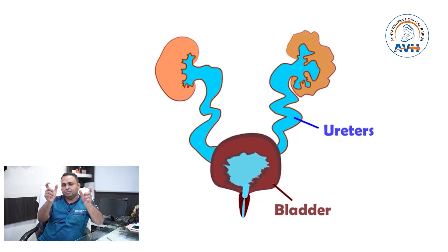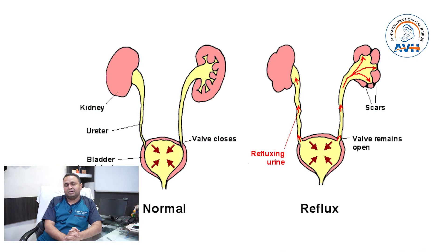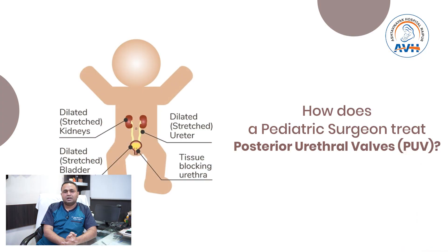Both the ureters will be dilated up to the level of the kidneys, and we may have a dysplastic or abnormal kidney in this case. Because of back pressure changes, the pressure inside the bladder becomes high and the urine is not able to flow outside, so it goes up and creates back pressure changes inside the kidney — what we call back pressure nephropathy.